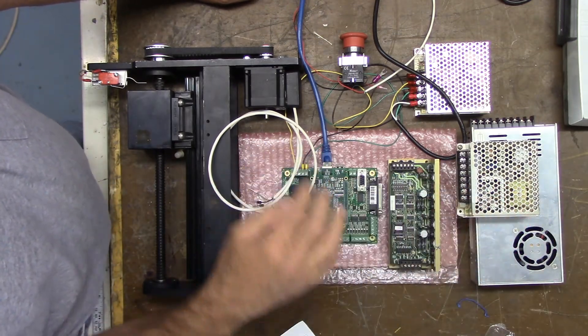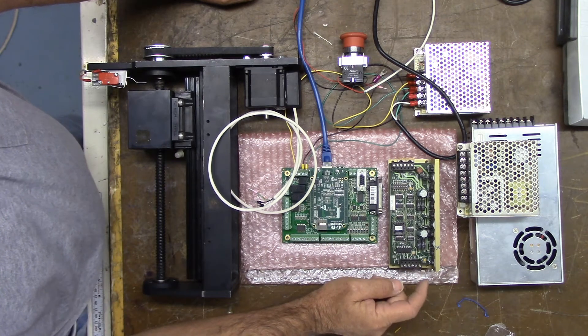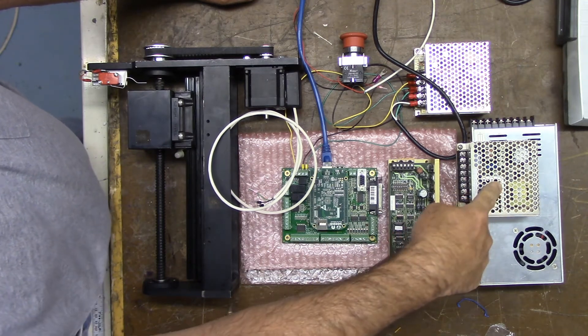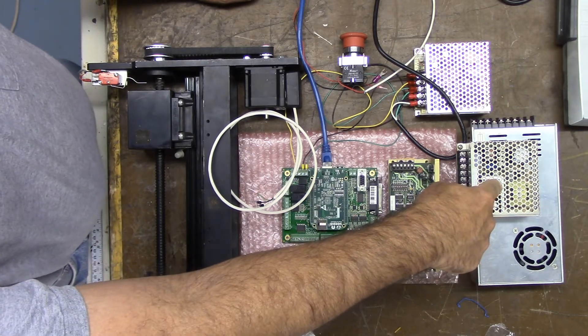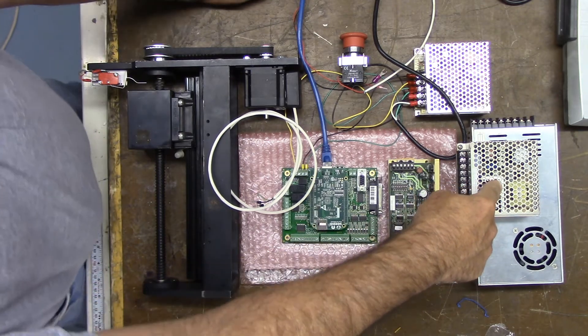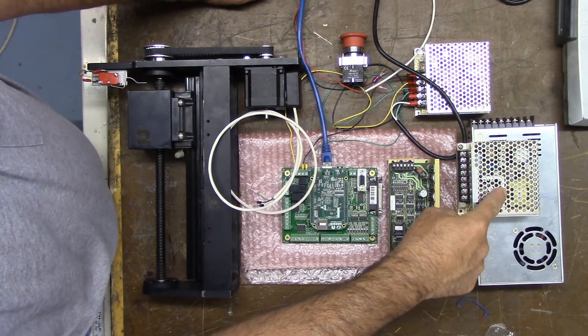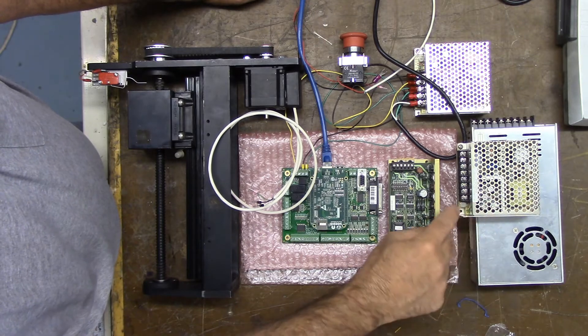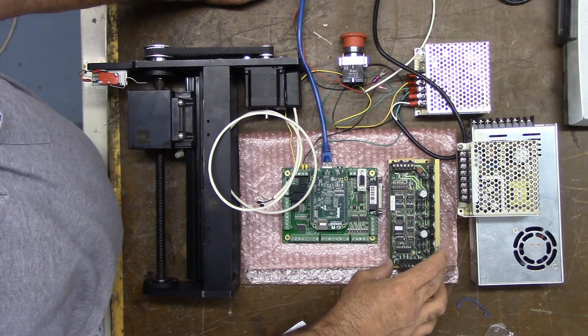And the reason being, I need five volts for the logic circuitry and the stepper driver. I like to buy these power supplies. It's a Meanwell power supply from Jameco, J-A-M-E-C-O dot com. They're very inexpensive. I think this one was less than 20 bucks, but the point being it has multiple outputs.